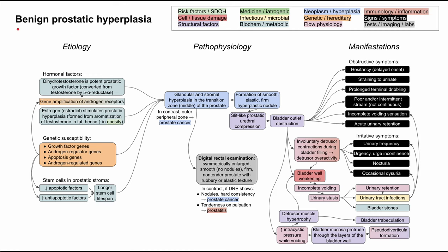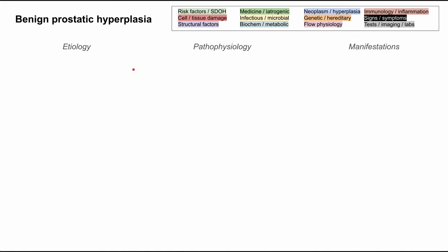This is a mechanism of disease map for benign prostatic hyperplasia, sometimes abbreviated to BPH. I'll be talking about the etiology, the pathophysiology, and the manifestations for BPH. Each of the boxes is color-coded according to the legend in the top right, and I'll be clearing and repopulating the flowchart as we talk about each concept. Let's go ahead and get started.